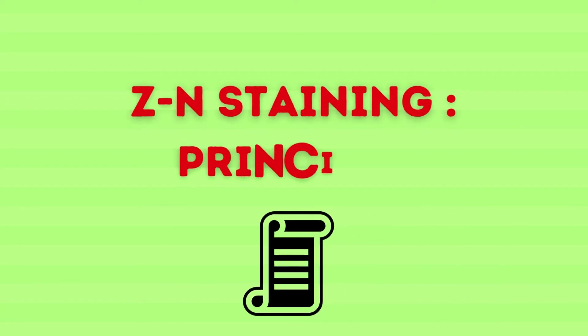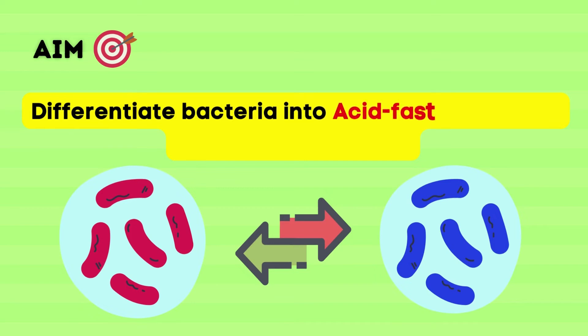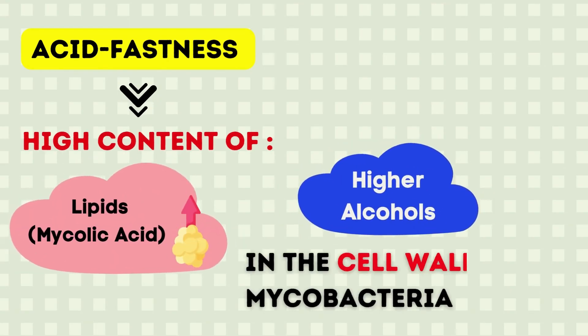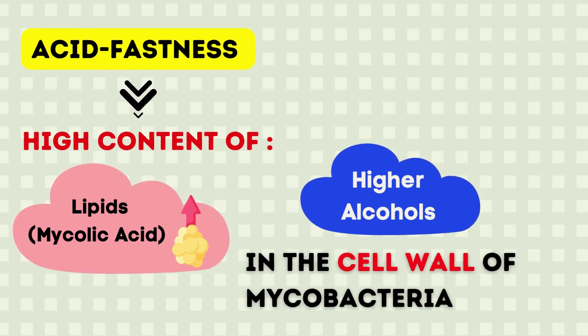Now let us look at the basic principle behind the Ziehl-Neelsen staining technique. ZN staining is a differential staining technique where we differentiate bacteria into two groups — acid fast and non-acid fast — based on the color taken up by the organism. Pink-colored bacilli are referred to as acid fast, while blue-colored bacilli are referred to as non-acid fast. The reason bacteria are acid fast is basically due to the high content of lipids, particularly mycolic acid.